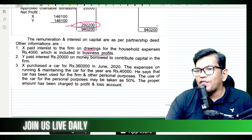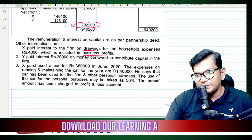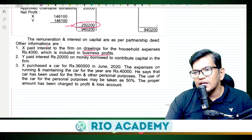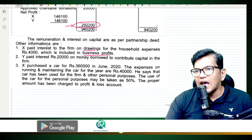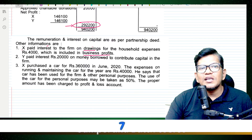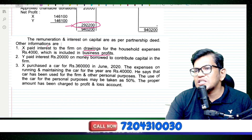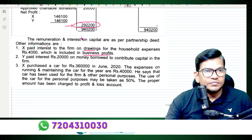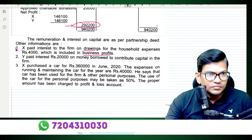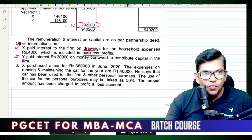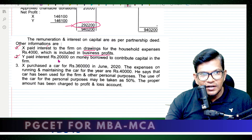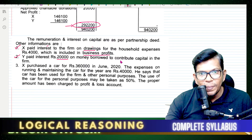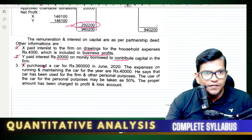Interest on drawings is added back to business profit. X also paid interest of 20,000 on money borrowed to contribute capital in the firm. This amount of 20,000 paid for contributing capital is also to be considered.